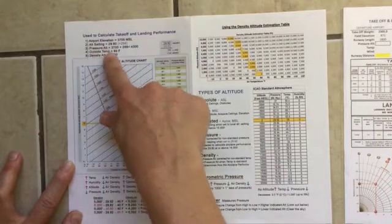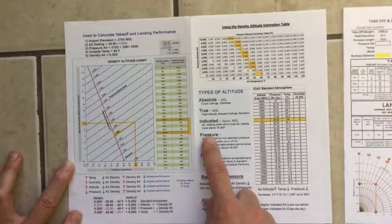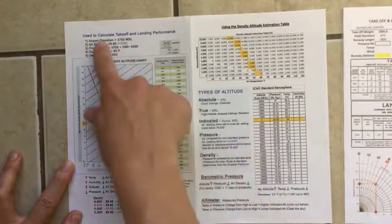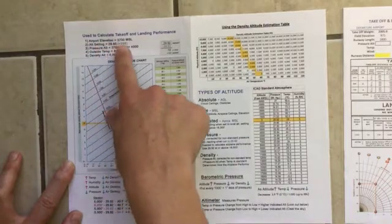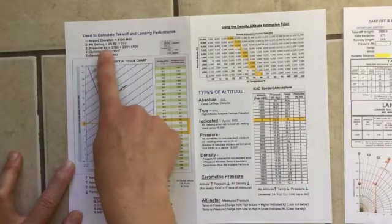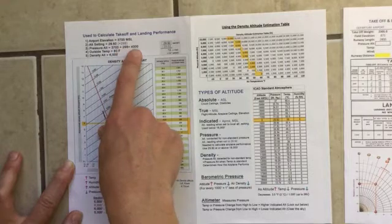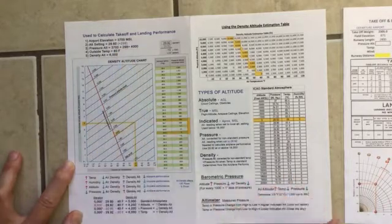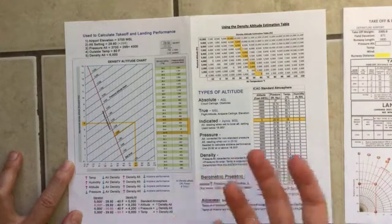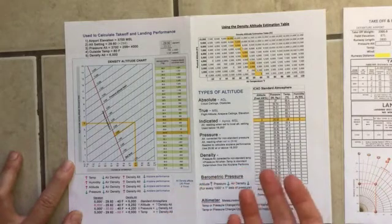It's a positive number so we have to add that to our airport elevation. That gives us pressure altitude because pressure altitude is regular altitude corrected for non-standard pressure. This is saying the pressure isn't standard, we need to add 298 to get our pressure altitude. So our airport is actually going to perform like it's at 4,000 MSL and not 3,700 MSL.